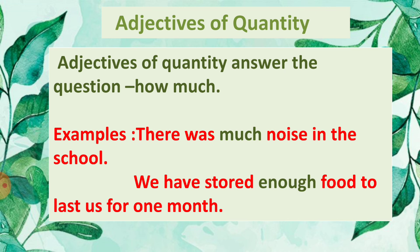The next type is adjectives of quantity. Adjectives of quantity answer the question 'how much?' They tell us the quantity of a thing. For example, 'There was much noise in the school' — how much noise? Much. 'We have stored enough food to last us for a month' — how much food? Enough. So adjectives of quantity answer the question 'how much?'